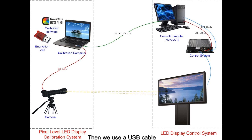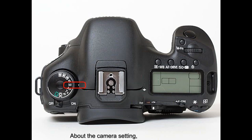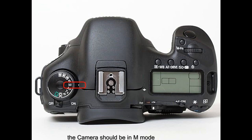Then we use a USB cable to connect the camera to the calibration computer. For the camera, please pay attention that the camera should be in M mode, which means manually adjust aperture and exposure.